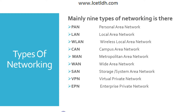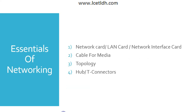Next we have the Virtual Private Network (VPN). By extending a private network across the internet, a VPN lets its users send or receive data as if their devices are connected to a private network, even if they are not — through a virtual point-to-point connection. Users can access a private network remotely. Then we have the Enterprise Private Network (EPN), which is built and owned by businesses that want to securely connect various locations to share computer resources.